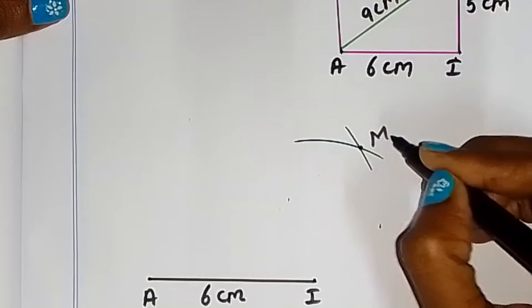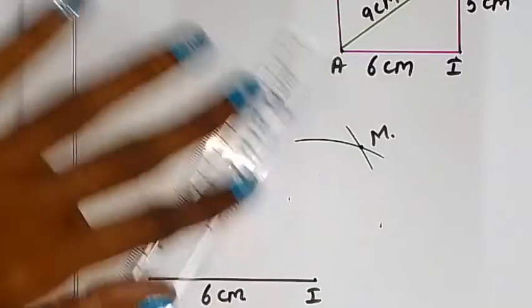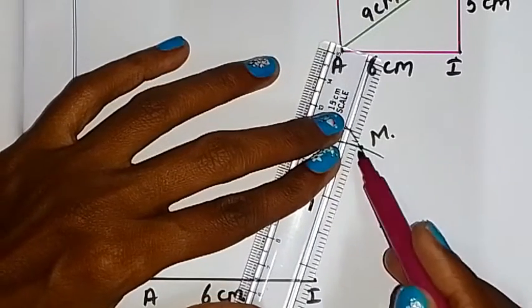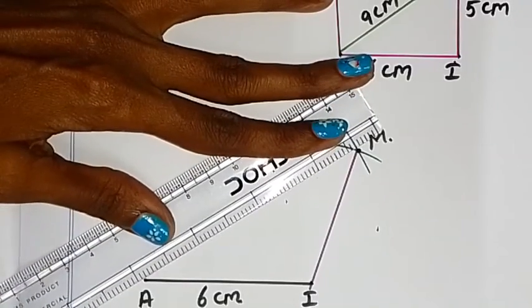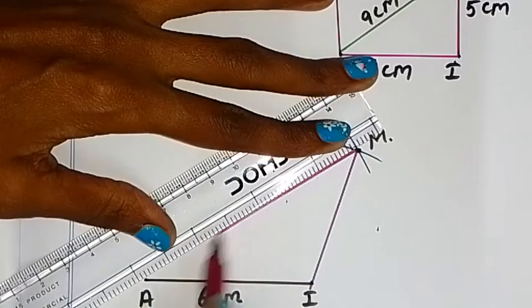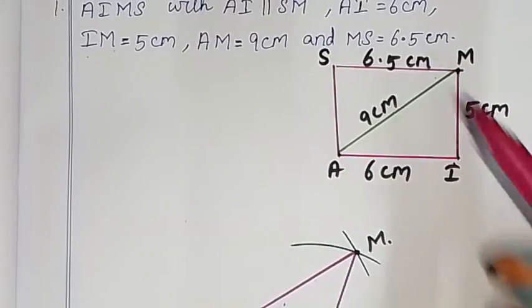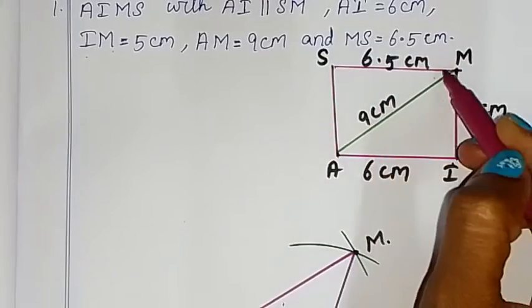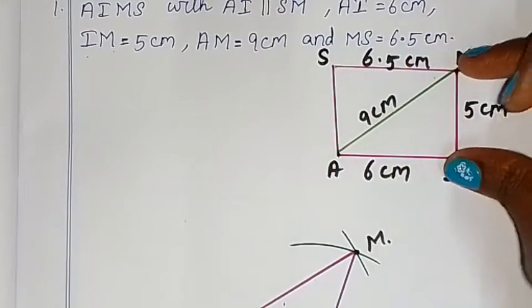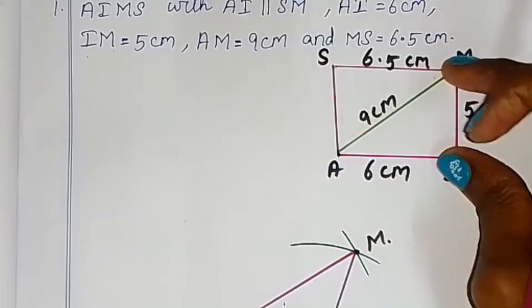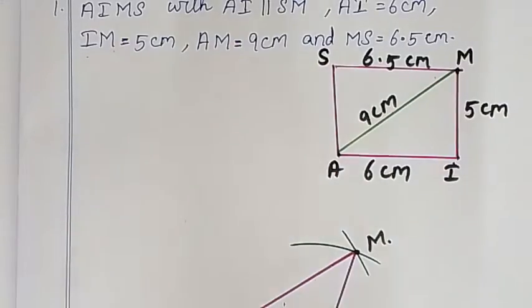Join the 2 lines, so IM, AM. This point needs measurement 6.5cm for the parallel line. First parallel line construct, cut S.